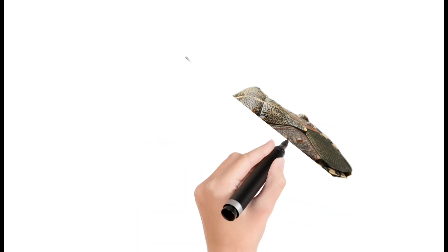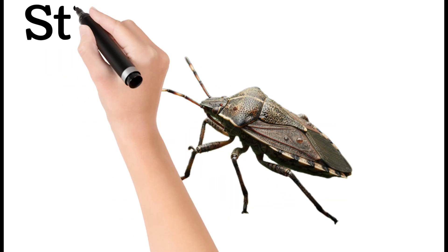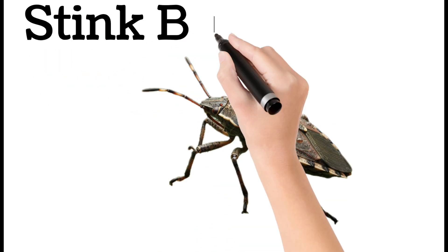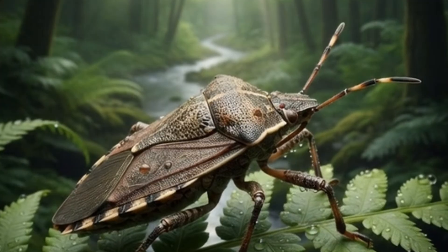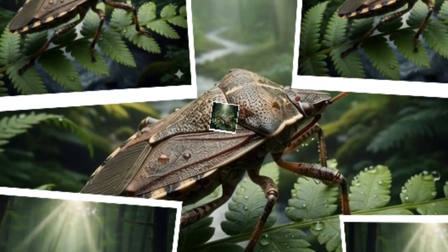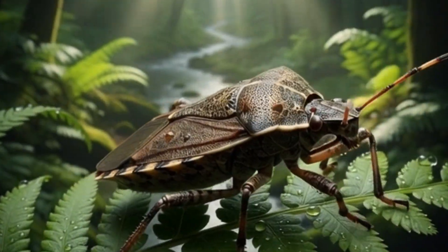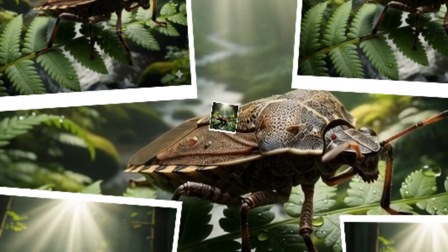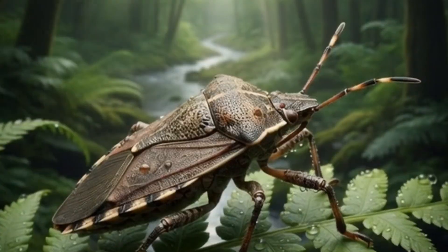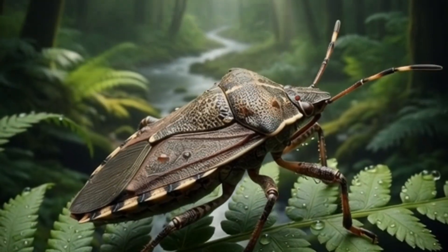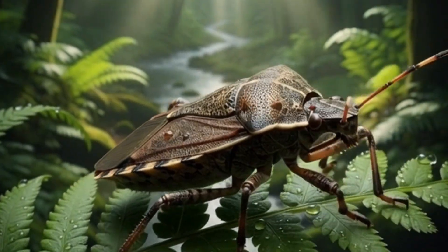Next, stink bug: a shield-shaped insect. Releases a foul smell when threatened. Feeds on fruits and leaves. Found in farms and orchards. Comes in many colors.